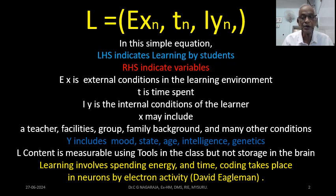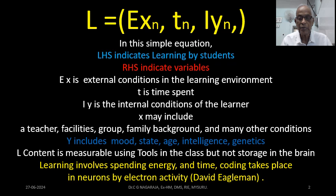Let's look at this equation. L is on the left-hand side, and on the right-hand side in the brackets I have given E with X subscript N, T with N, and I with Y subscript N. What do I mean by that?